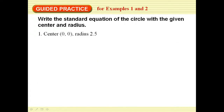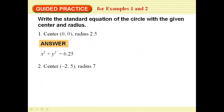Here are a couple for you to try. When the center is (0, 0) it's relatively easy — we just have x squared plus y squared equals 2.5 squared, which is 6.25. When the center is (−2, 5) and the radius is 7, we plug in: x minus negative 2 is x plus 2, quantity squared, plus y minus 5, quantity squared, equals 7 squared, which is 49.